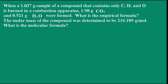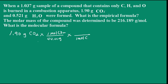Let's go ahead and start. The first thing we want to do is find the number of moles of carbon. We're told that we have 1.9 grams of carbon dioxide, so we'll convert that to moles. One mole of carbon dioxide contains 44.01 grams. One mole of carbon dioxide contains 1 mole of carbon. This gives us 0.04317 moles of carbon.